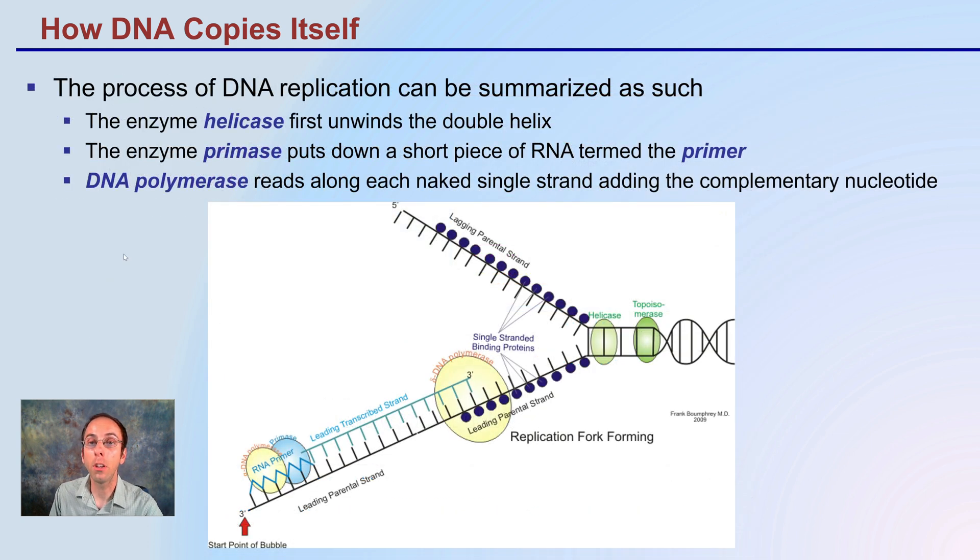The process of DNA replication can be summarized as helicase first unwinding that DNA, then primase putting down that short primer. We could see the RNA primer located right here and polymerase reading along and adding in the complementary bases. Keep in mind that polymerase only works in the 5 to 3 prime direction as it's going through. This is the leading strand that we're focusing on here.